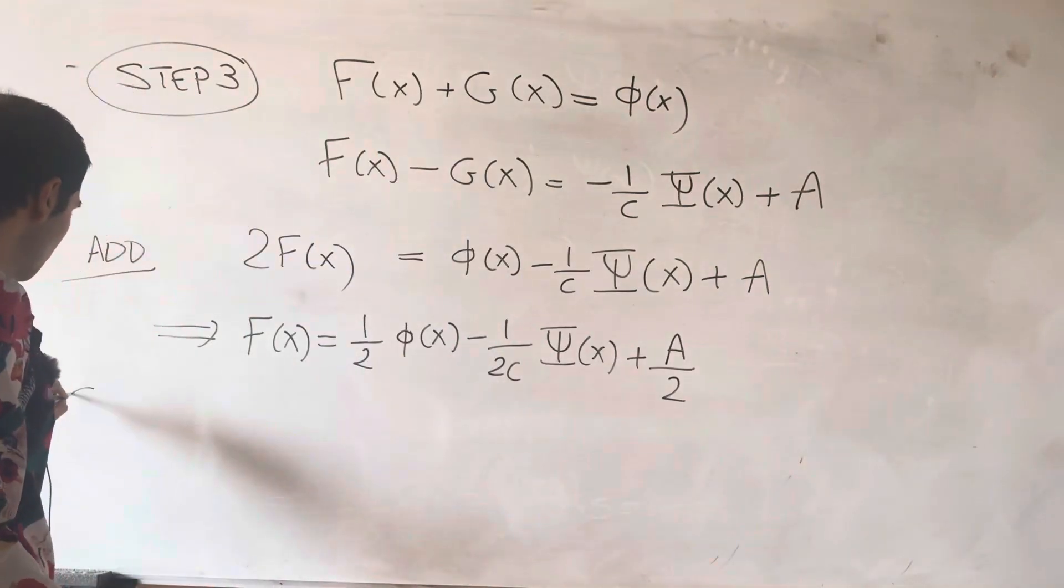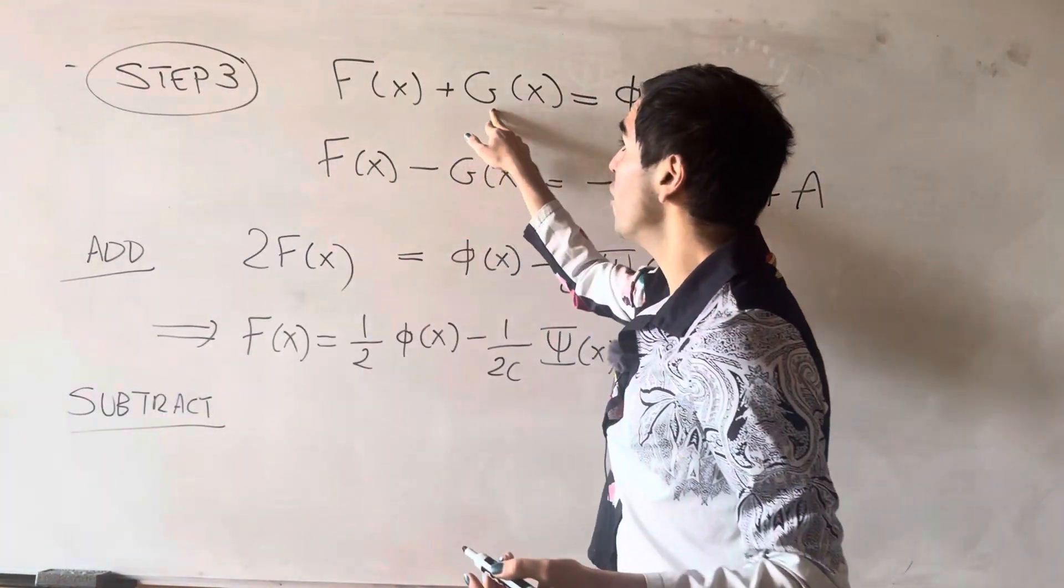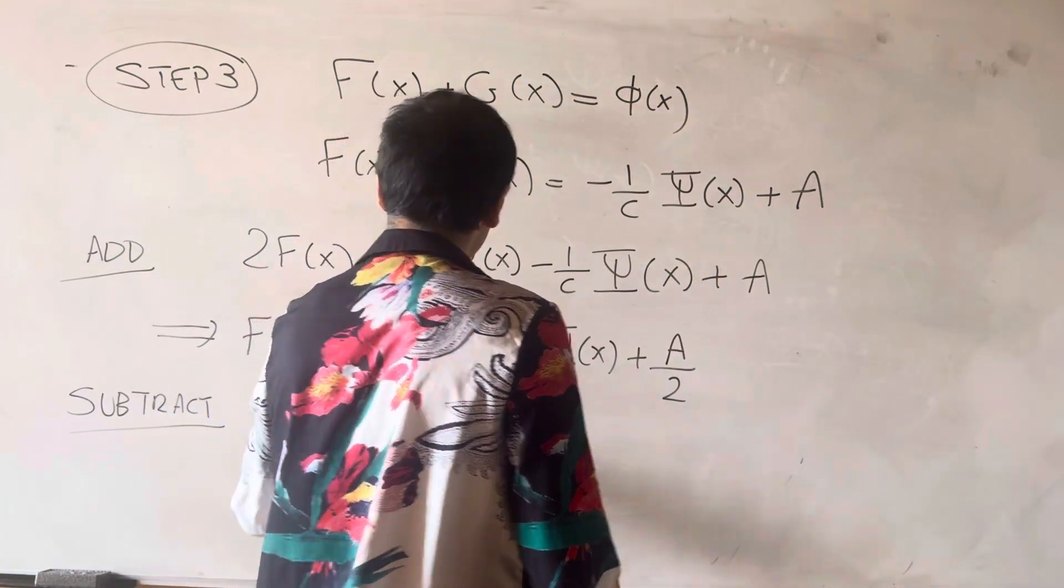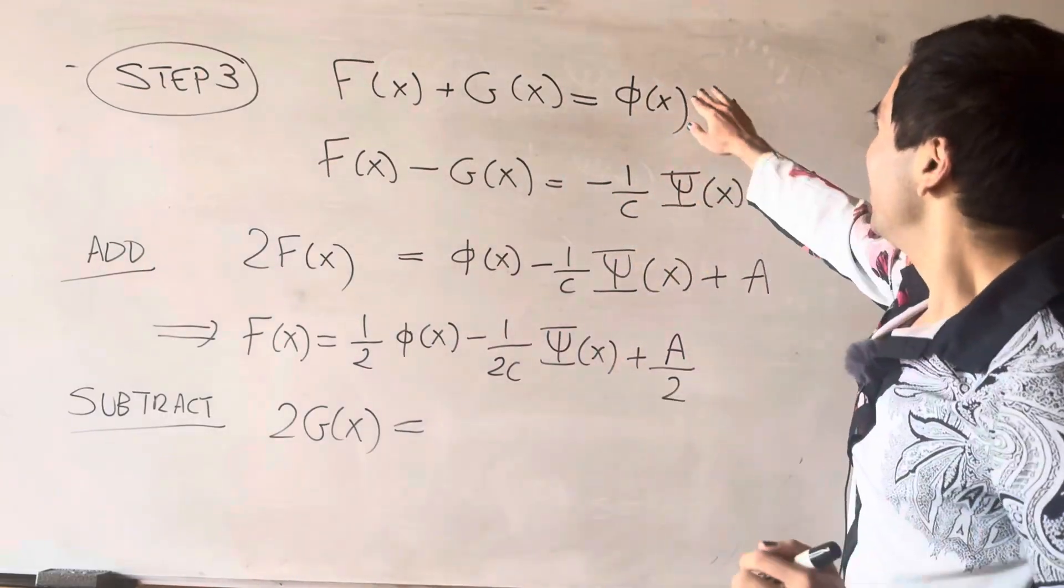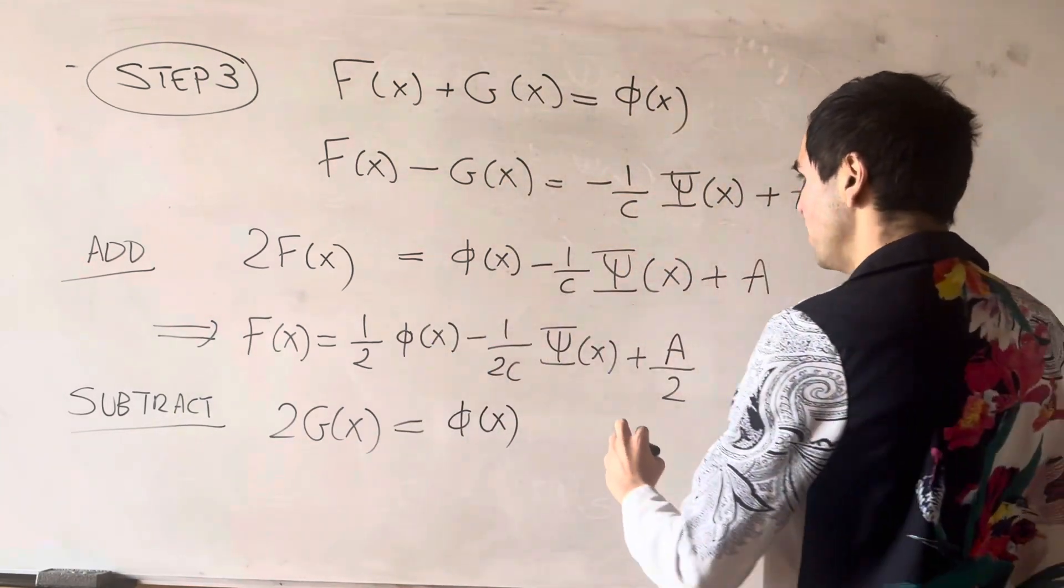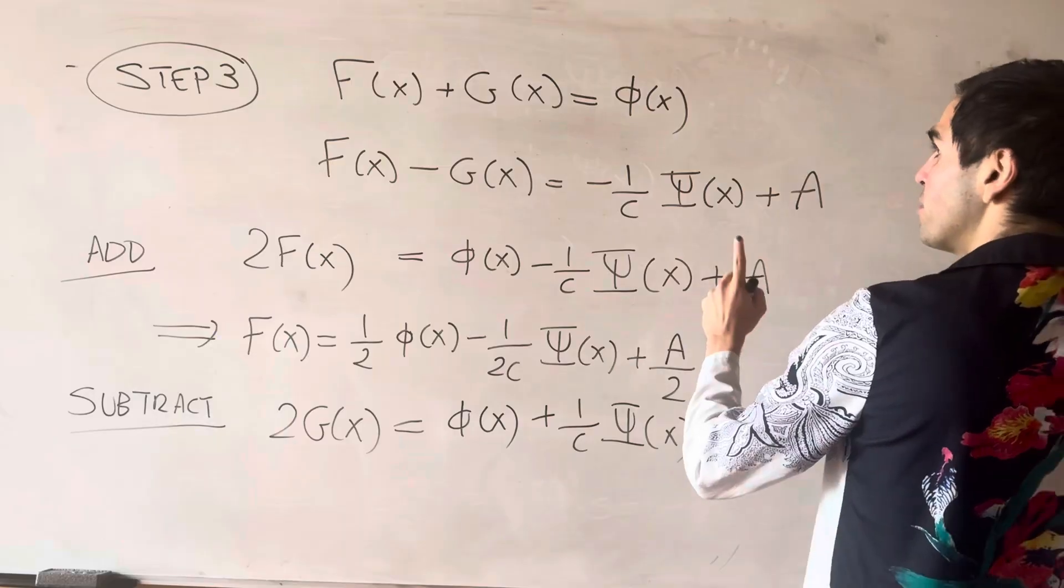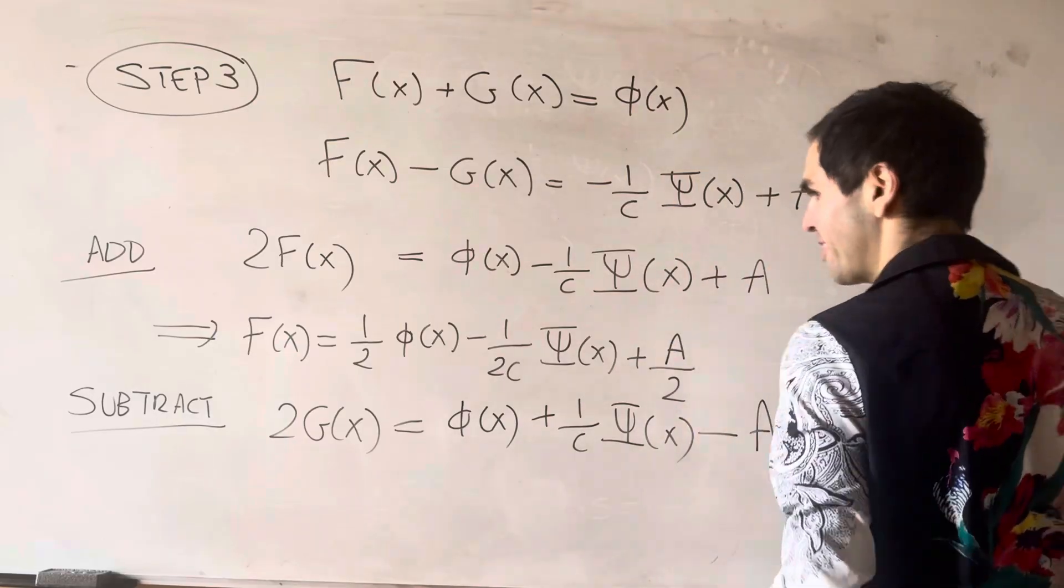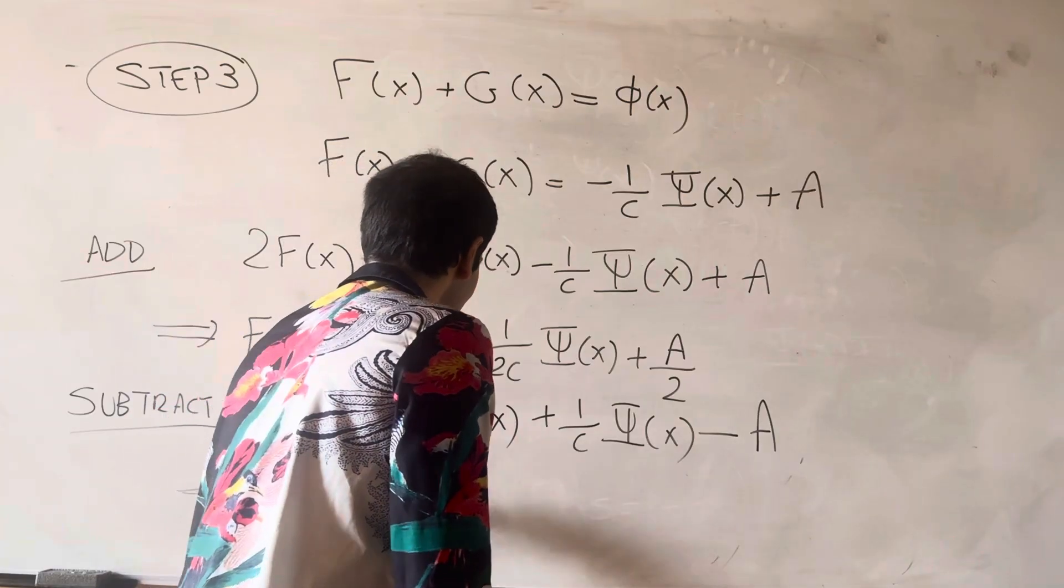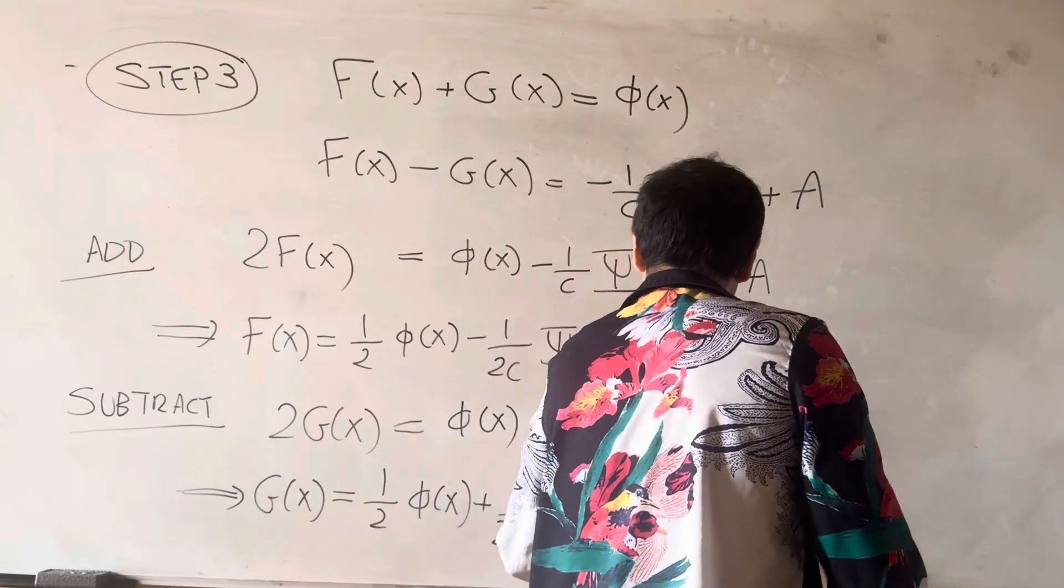And then, to solve for g, we just subtract. And then we get 2g equals phi of x plus one over c big Psi of x minus a. To be or not to be? That is the question. And so, g of x is one half phi of x plus one over 2c Psi of x minus a over two.